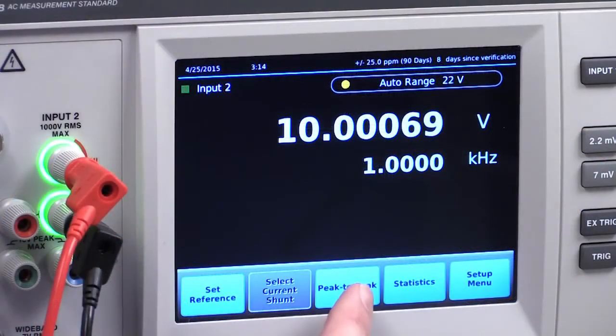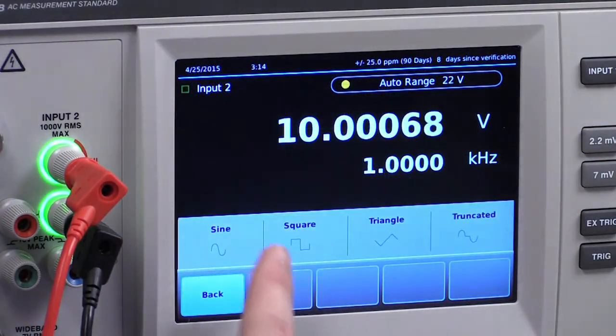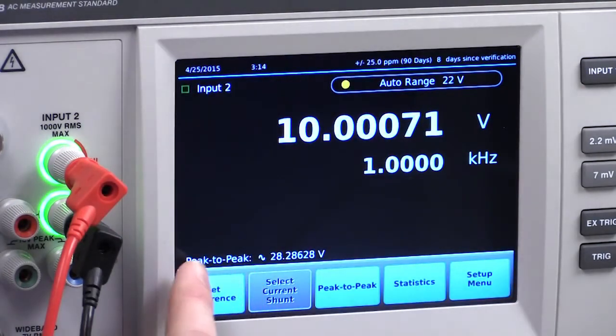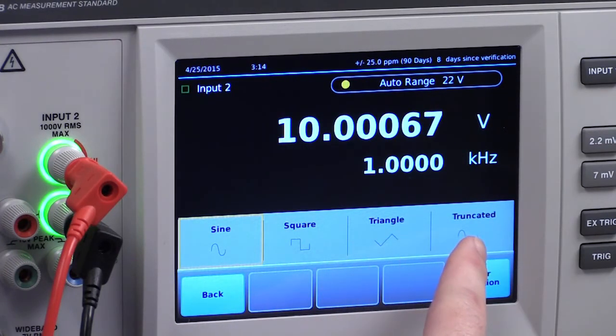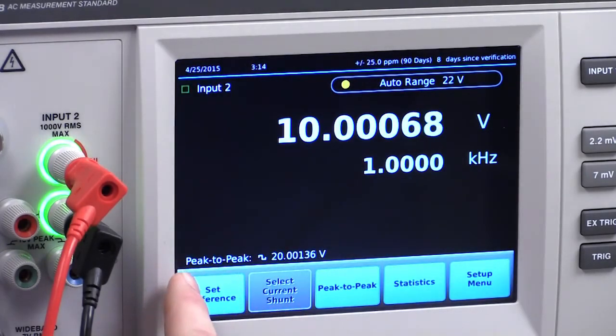The fifth major improvement is the ability to view waveform calculations on the main display for four common waveforms: peak-to-peak sine, square, triangle, and truncated waveforms. These calculations save time and give you the measurement instantly.